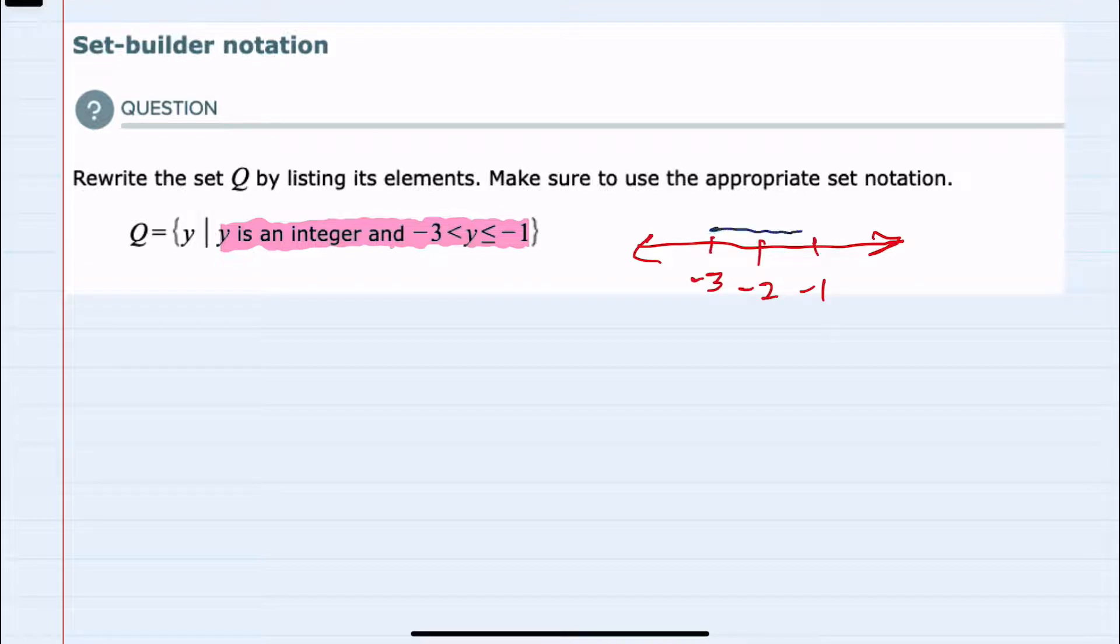then Y is between negative 3 and negative 1. It includes negative 1 because it has the 'or equal to,' but it does not include negative 3.